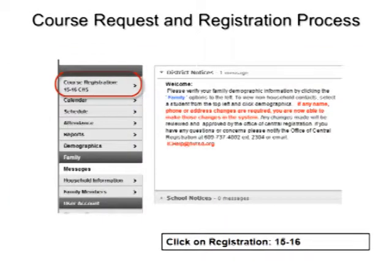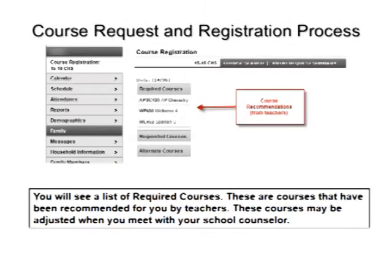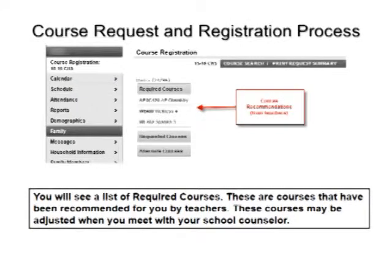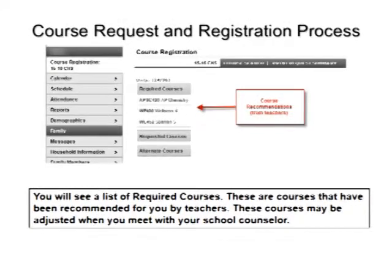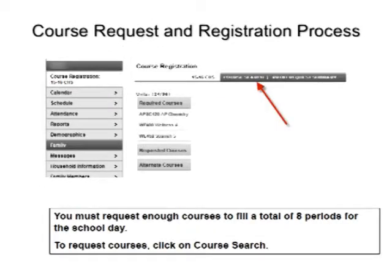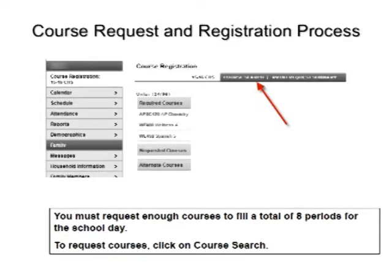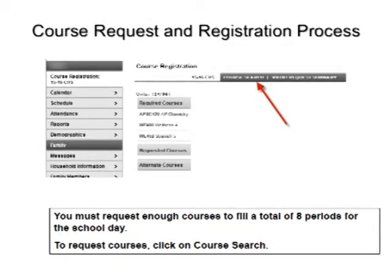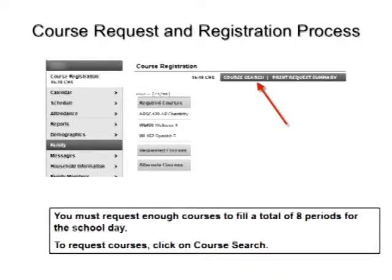Click on Registration 1516. You'll see a list of required courses. These are the courses that have been recommended for you by your teachers. These courses may be adjusted when you meet with your school counselor. You must request enough courses to fill a total of 8 periods for the school day. To request your courses, click on Course Search.